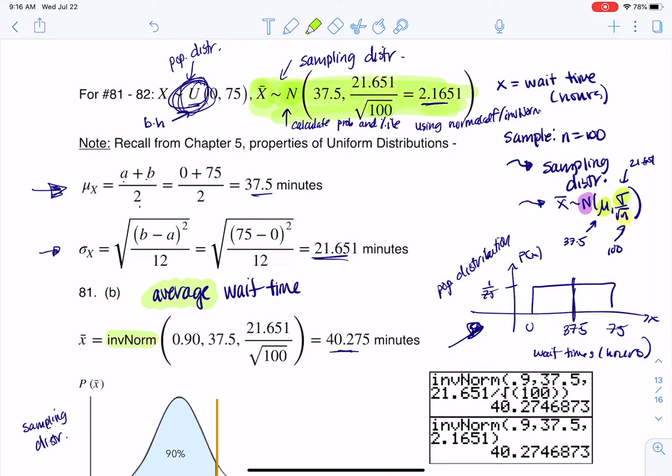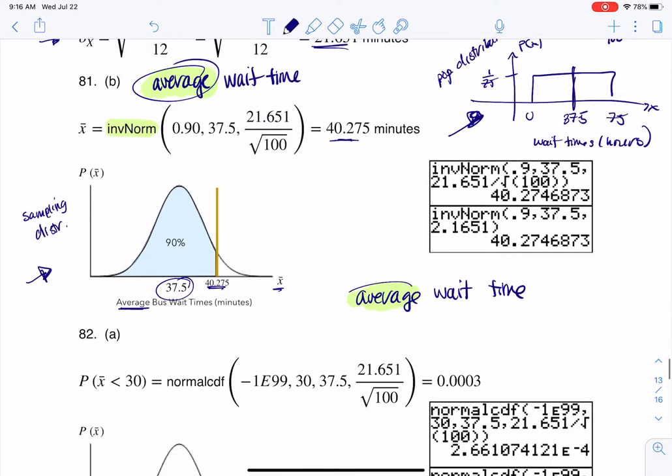If it had just said wait times, then we would have been over here on the population distribution. So once you set up your population and your sampling distributions, you have to then discern, well, which distribution is the question asking me about? And in this case, because we saw the word average in both of these setups, I'm on the sampling distribution.